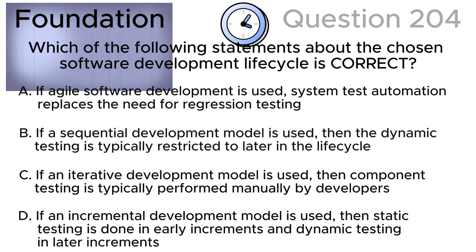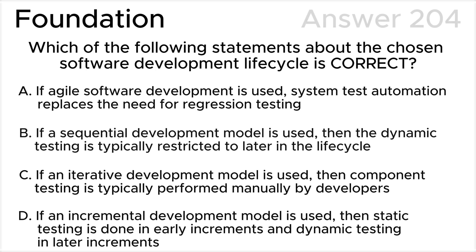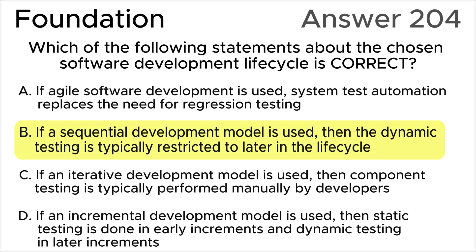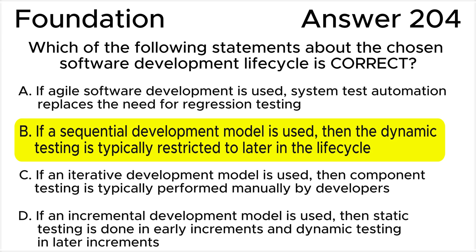The correct answer is B. According to the ISTQB syllabus, if a sequential development model is used, early in the lifecycle no code is available for execution, so during this time static testing — e.g., reviews — is performed. Later in the lifecycle, code is available for execution and dynamic testing is possible. Note that preparation for dynamic testing will often occur early in any software development lifecycle.